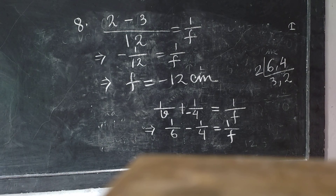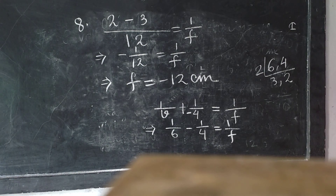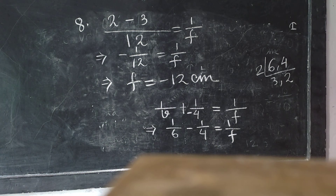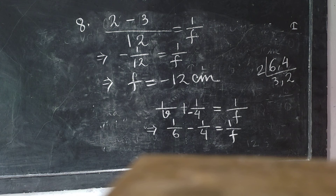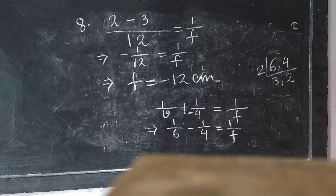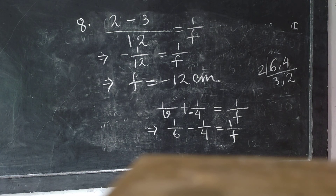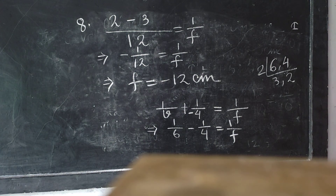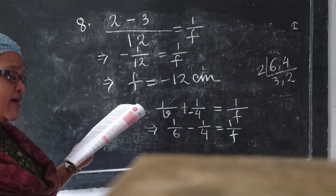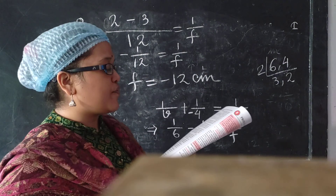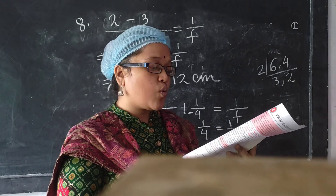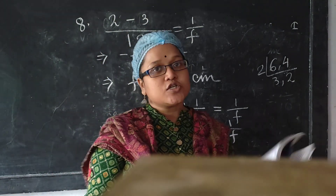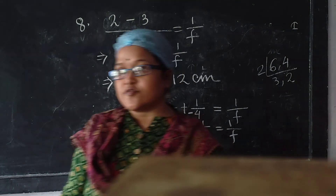Now going to the next sum, that is question number 9. An object of length 4 cm is placed in front of a concave mirror at a distance of 30 cm. The focal length of the mirror is 15 cm. Where will the image form? What will be the length of the image? Let's solve this in the next video.